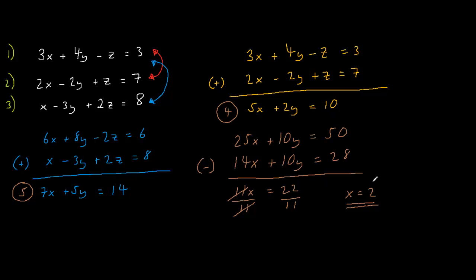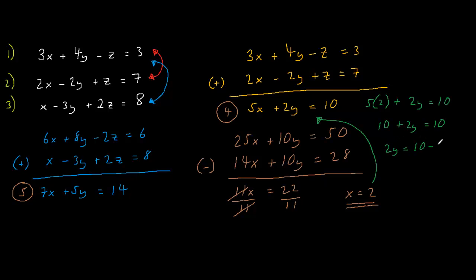As I know that x is 2, I plug it into equation 4. So I get 5 multiplied by 2 plus 2y equals 10, that's 10 plus 2y equals 10, which gives us 2y equals 10 minus 10, which is 0. So y equals 0.